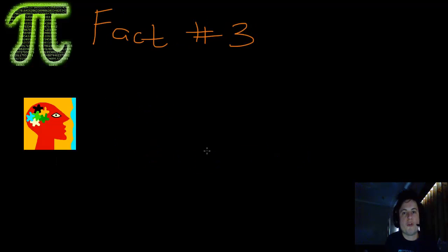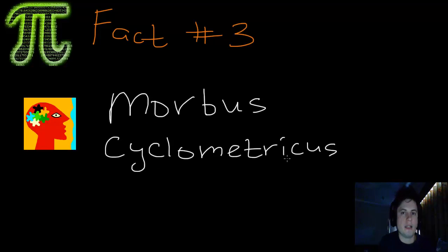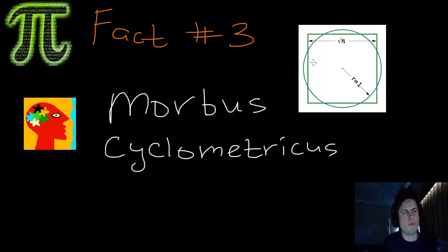Fact number three. One of the first mentionings of a mental disorder is actually from ancient Greece. The term Morbus Cyclometricus refers to a disorder that ancient Greeks developed when trying to solve the problem of squaring the circle. Basically, imagine you have a circle with radius R. You're trying to find a square that has exactly the same area as the circle, but you can only use rulers and tools in your pencil case. They found it was impossible. They just couldn't do it and it drove them crazy, and they developed this mental disorder known as Morbus Cyclometricus.